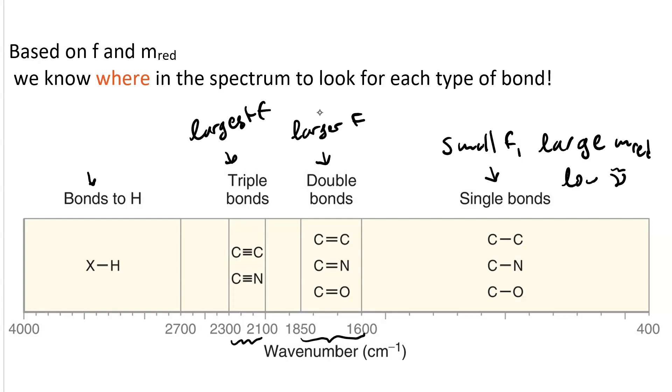And then bonds to H. They don't have a particularly large F, but they have a small reduced mass. So a small denominator means a large wavenumber, or a high wavenumber. And we see bonds to hydrogen in the region above 2700 wavenumbers.